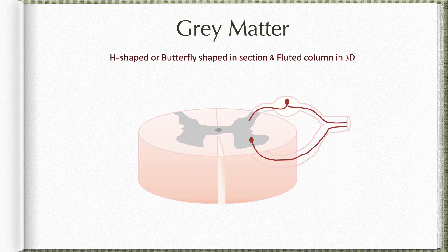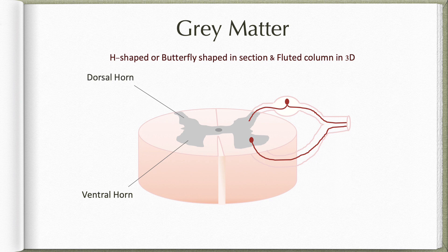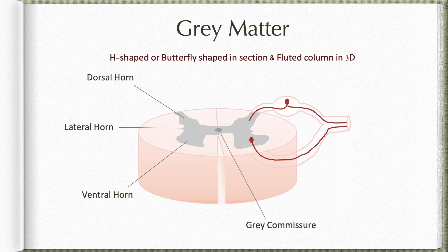Grey matter of the spinal cord is described as having an H-shape or butterfly shape in section, or it resembles a fluted column in three dimensions. In section it shows a ventrolateral extension called the ventral horn, which does not extend all the way to the surface, and a dorsolateral extension called the dorsal horn which extends almost to the surface. In the thoracic segments and upper one or two lumbar segments we also find a lateral horn. The right and left halves of the grey matter are connected by grey commissure located around the central canal.